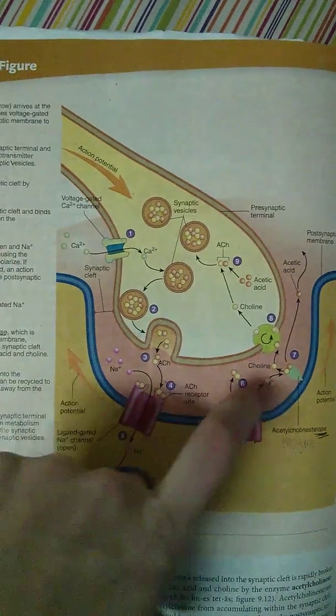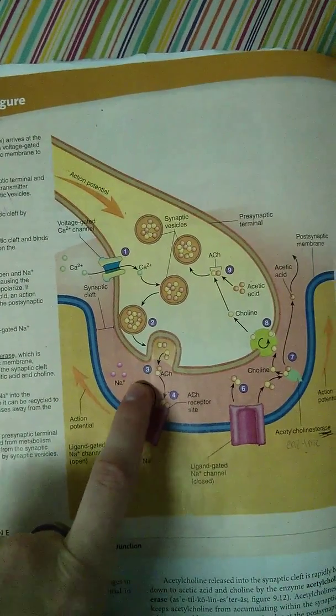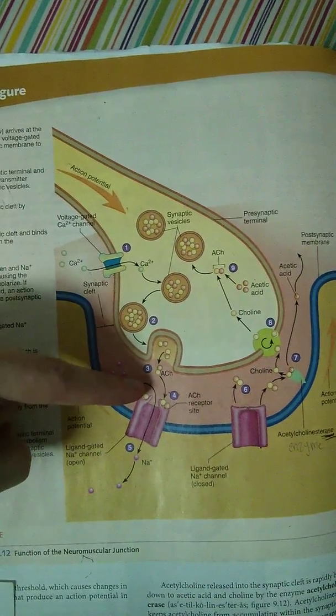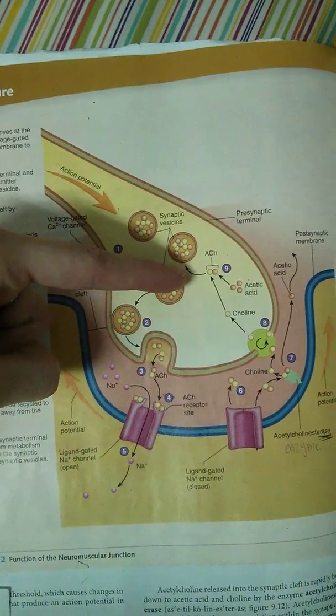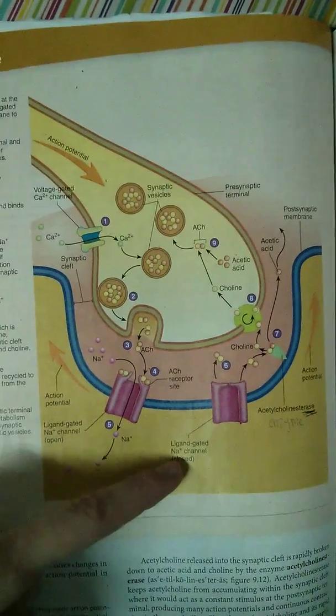So this space in between where they do not touch is called the synapse or the synaptic cleft. So the thing that comes before the synapse is called the presynaptic terminal, and what comes after the synapse is called the postsynaptic terminal.